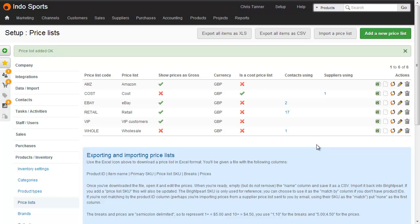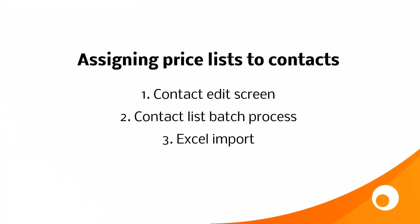We now have an extra price list for VIP customers. The next thing we need to do is assign this price list to the contacts that are VIPs. We can either do this one at a time from the contact edit screen, in batch from the contact list, or we can import a spreadsheet from Excel to set lots of contacts to this price list all at the same time.